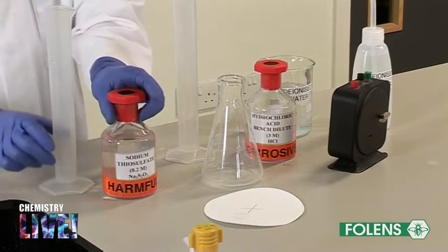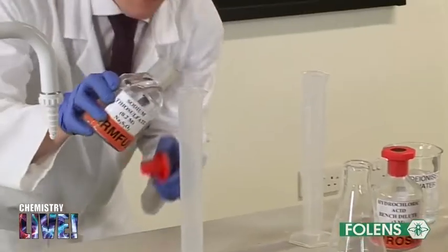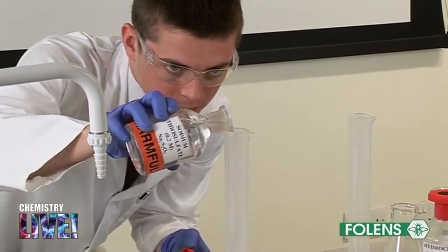Using a graduated cylinder, pour 100 centimeters cubed of 0.2 molar sodium thiosulfate into a conical flask.